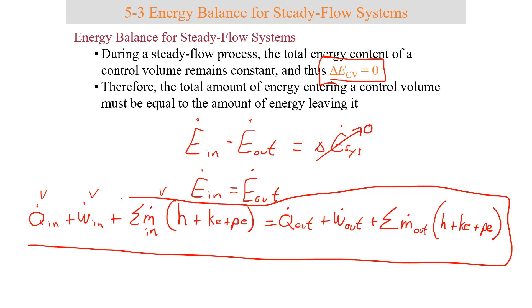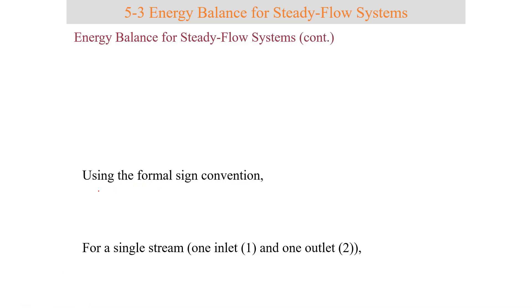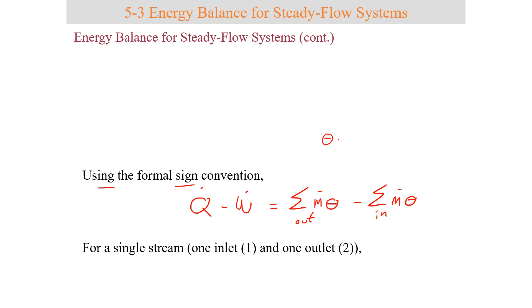This can also be written using a single sign convention: heat flow minus work equals the sum of energy out by mass minus the sum of energy in by mass. Here, theta represents the specific energy possessed by a flowing fluid, which is enthalpy plus kinetic energy plus potential energy.